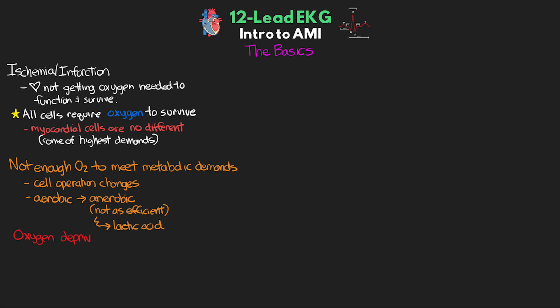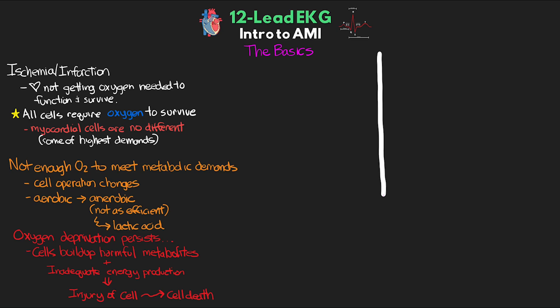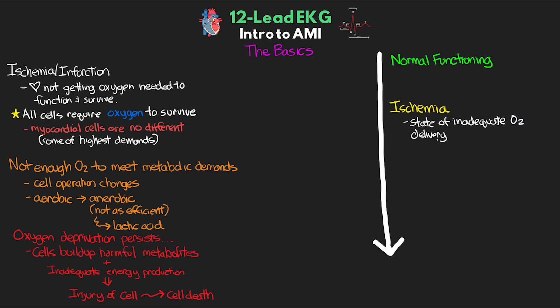If this oxygen-deprived situation persists, the cells will build up harmful metabolites combined with inadequate energy production, eventually leading to injury of the cell. If this process continues without reversing the situation causing the lack of oxygen, eventually the cells will die. We can think of this process as something that takes place along a continuum from a normal state of functioning to ischemia, which is a state of inadequate oxygen delivery, then to injury of the cell, and eventually to infarction, which is cell death. As our patient progresses through these stages, we'll have generally well-defined presentations from both a signs and symptoms standpoint, as well as EKG changes that we'd expect to see.